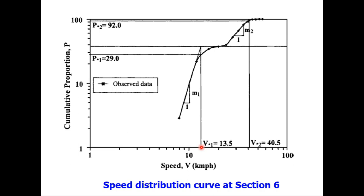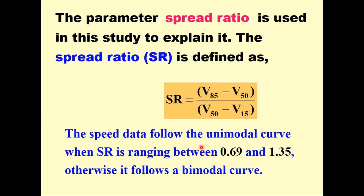Now the question is how do we know that a particular speed data will follow a unimodal or a bimodal distribution. It was observed that the bimodality in the speed data does not depend much on proportion of motorized and non-motorized traffic. Rather it depends upon how speeds are distributed in a sample. Therefore we defined a term called speed spread ratio. This spread ratio is used in this study to explain the bimodality or unimodality in the speed data and this is defined as V85 minus V50 upon V50 minus V15.